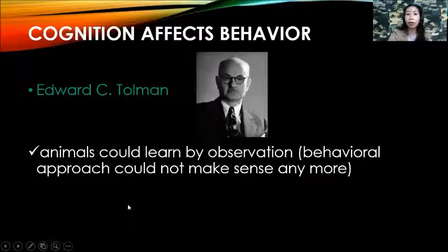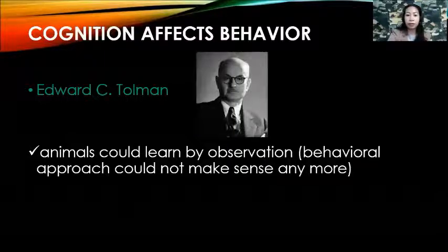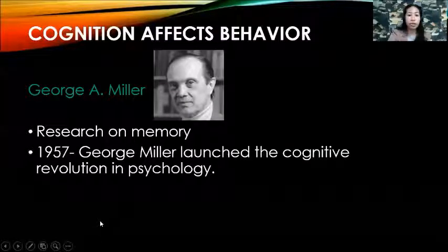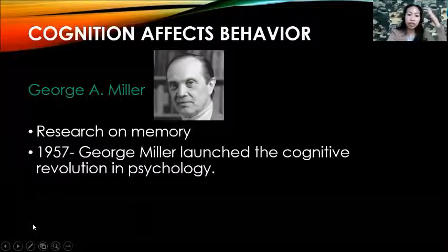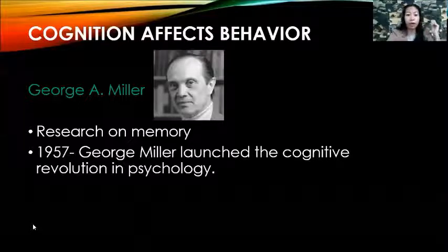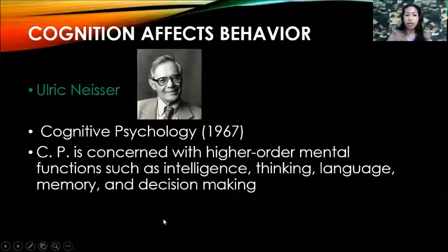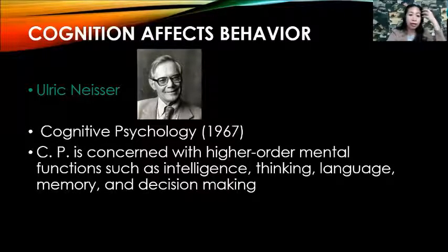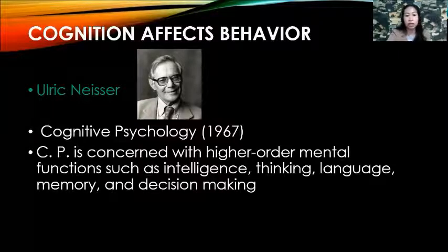Then cognition affects behavior. The known name is Edward Tolman — it says animals could learn by observation. Also, George Miller launched the cognitive revolution in psychology through research on memory. Another known name is Ulrich Neisser — cognitive psychology is concerned with higher-order mental functions such as intelligence, thinking, language, memory, and decision making. Cognition is all in the head and it affects how we behave.